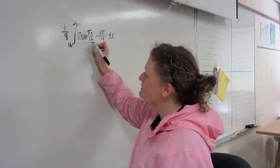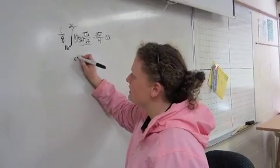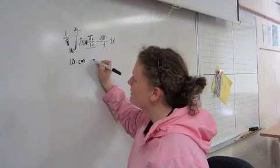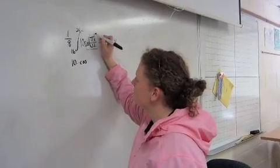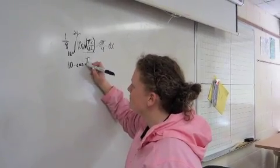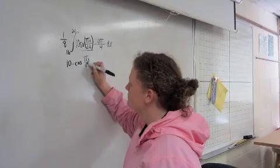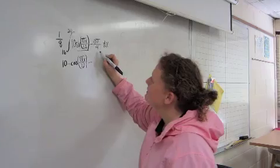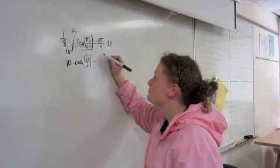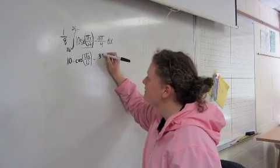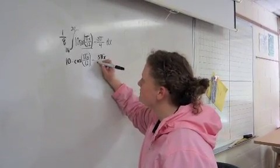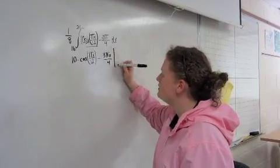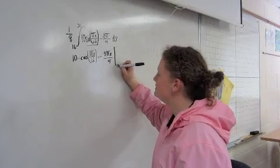So, the antiderivative of sine is negative cosine. We multiply it by 10, just as before, and this stays the same. In finding the antiderivative of this, we have to times it by x. So, it becomes 3πx/4 on the integral of 16 to 24.